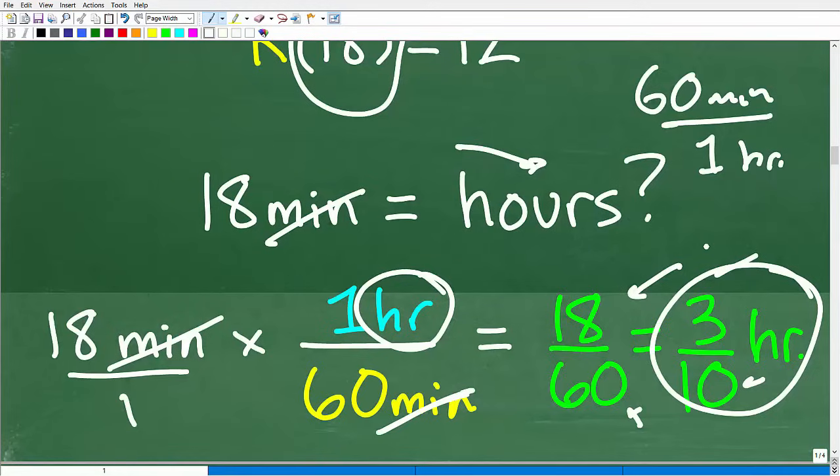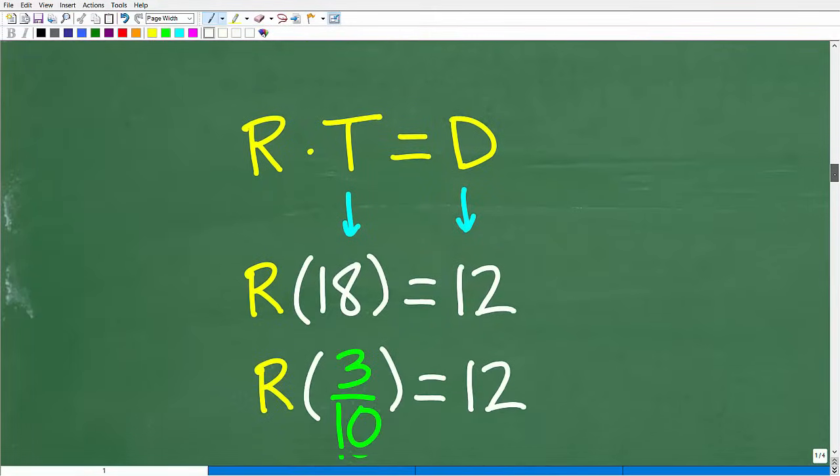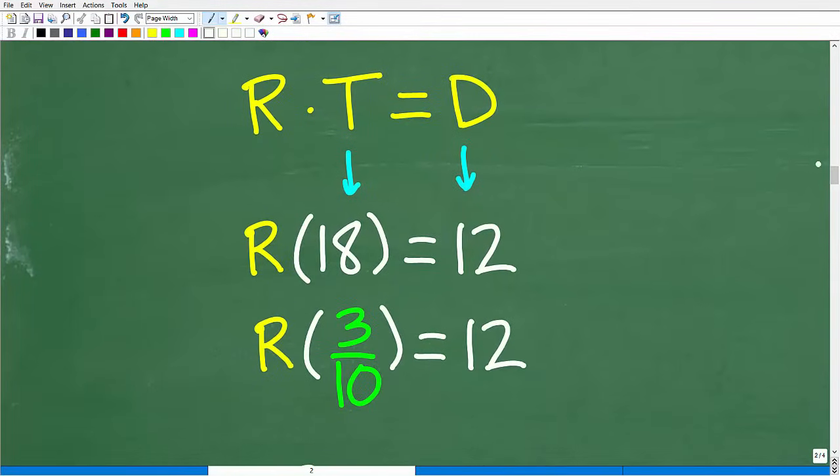Okay, so now we are ready to go ahead and plug this into our lovely formula. Rate times time is equal to distance. We're not going to use 18 minutes, we're going to use three-tenths of an hour. Okay, so now we have our time in hours, our distance is in miles. So when we solve for the rate, it will be in miles per hour.